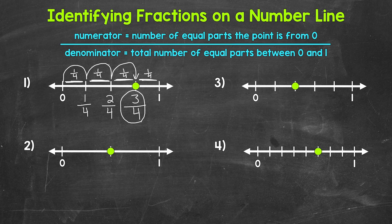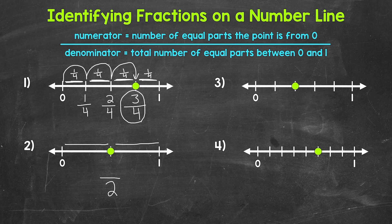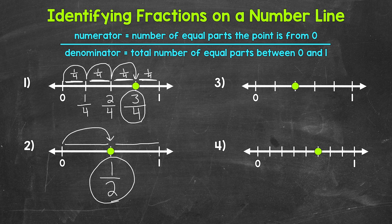Let's move on to number two. We will start with the denominator, so we need the total number of equal parts between zero and one. We have one equal part and two equal parts, so two is our denominator. Now we count the number of equal parts the point is from zero — one. So one is our numerator. Our fraction for number two is one half. And we can see that the point is halfway in between zero and one, so this makes sense.